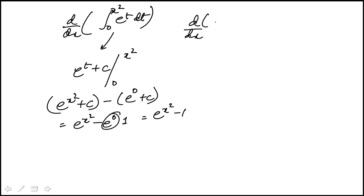So we're looking for the derivative of e to the x squared minus 1. Derivative of minus 1, that's 0. So this is equivalent to derivative of e to the x squared.